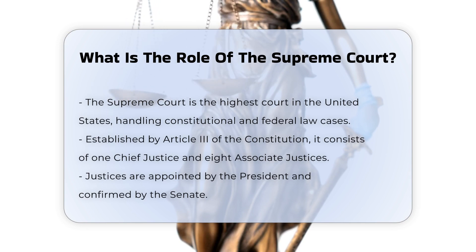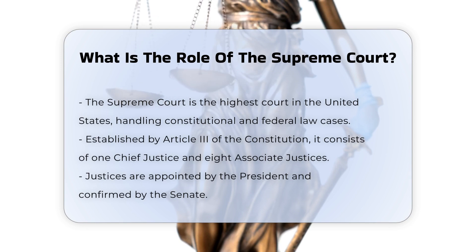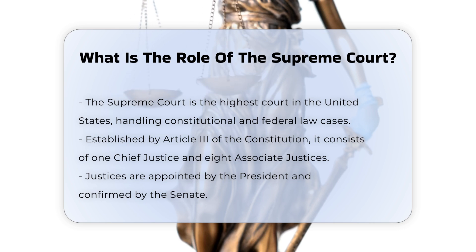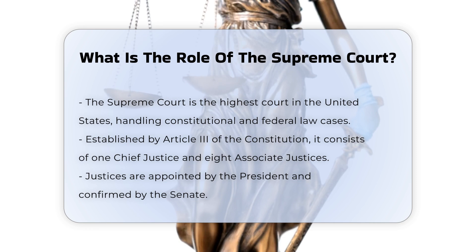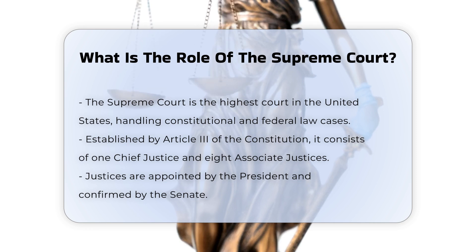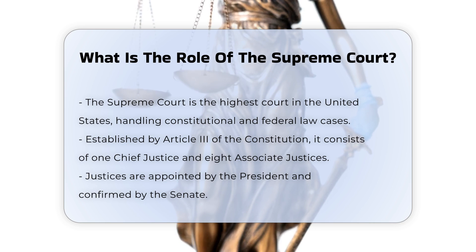Establishment and composition. The Supreme Court was established by Article III of the Constitution, which vests the judicial power of the United States in one Supreme Court and such inferior courts as Congress may ordain and establish. The court currently consists of one chief justice and eight associate justices, appointed by the President and confirmed by the Senate.